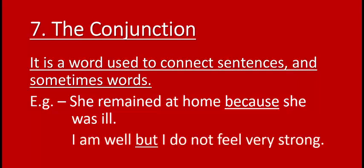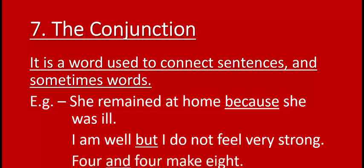Second example: I am well, but I do not feel very strong. There are two sentences here — I am well, and I do not feel very strong — joined by the word but. So but acts as the conjunction here. Third example: Four and four make eight. Here, the word and is joining two words — four and four — so and also acts as a conjunction.